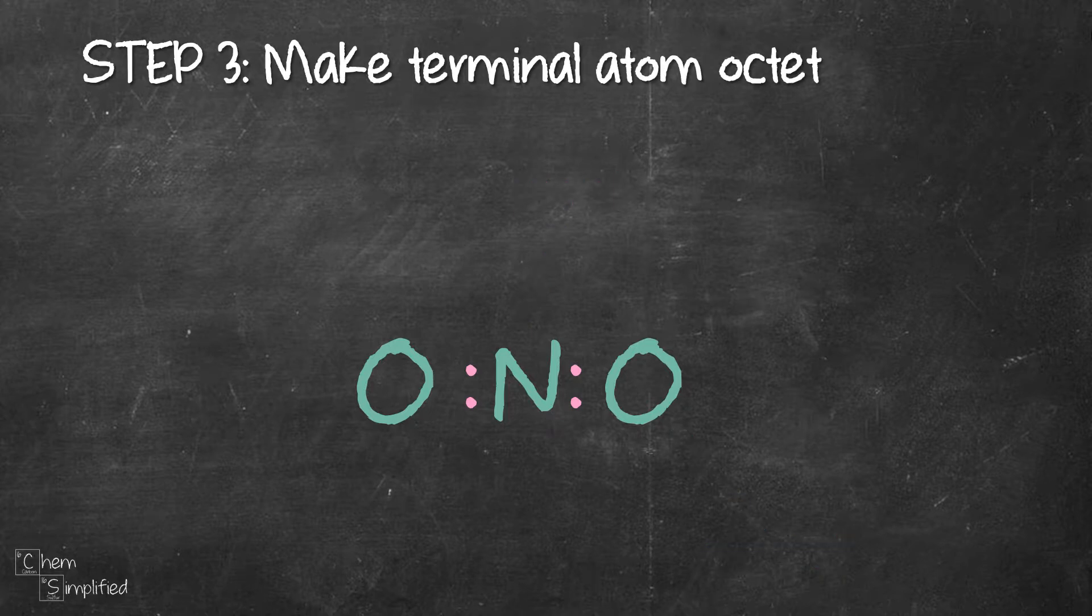Step 3, we need to make the terminal atom octet. Meaning we need to make them have eight electrons. At the moment each of the oxygen only has two electrons. So that means we need to add six electrons on both oxygens.